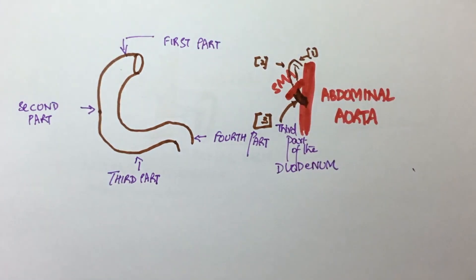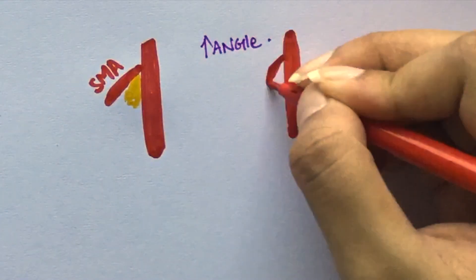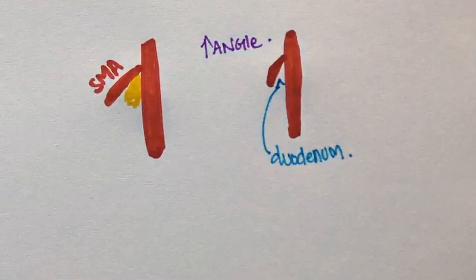Individuals with superior mesenteric artery syndrome will present with postprandial pain and intermittent symptoms of obstruction. People with low abdominal fat are at high risk for this condition. When there is fat present between the two structures, it prevents compression of the duodenum. But when there is less fat, the aortomesenteric angle gets reduced and this results in duodenal compression.